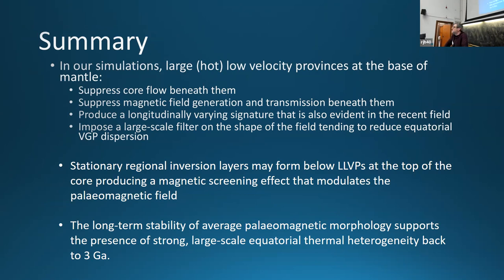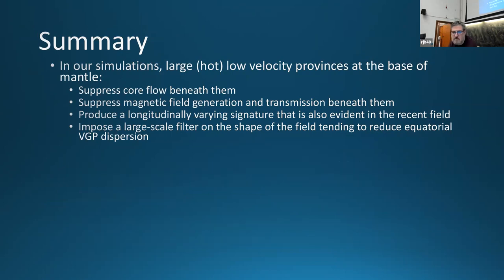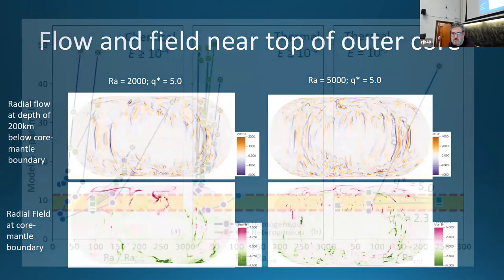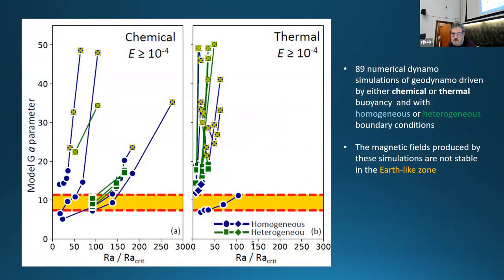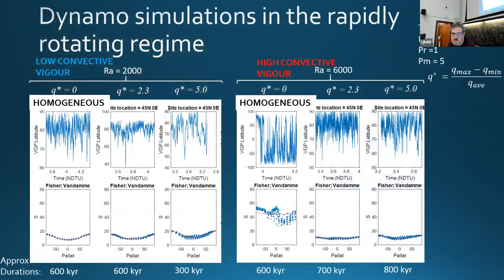You showed plots that had q0 and q2.3 and q5. For my eyes, q2.3 and q5, the kind of variation is kind of the same, similar. Do you know, is it like a scale function at some point? What's the minimum?